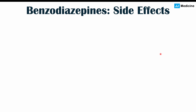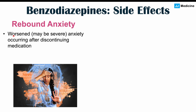When benzodiazepines are stopped, especially too quickly, rebound anxiety can occur. Since benzodiazepines are used to reduce anxiety, stopping them can cause a flare-up or worsening of anxiety, which may be severe in some cases. This happens due to changes in GABA receptor activity and other neuronal changes that occur when the medication is discontinued.